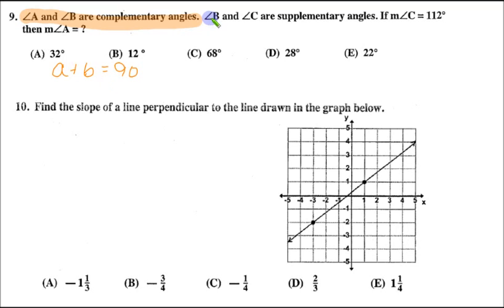We're also giving the information that angle B and C are supplementary. Supplementary means they sum to 180. So we have B plus C equals 180. We're given one last piece of information, the measurement of angle C is 112. And this is good because now we have a value, C equals 112.